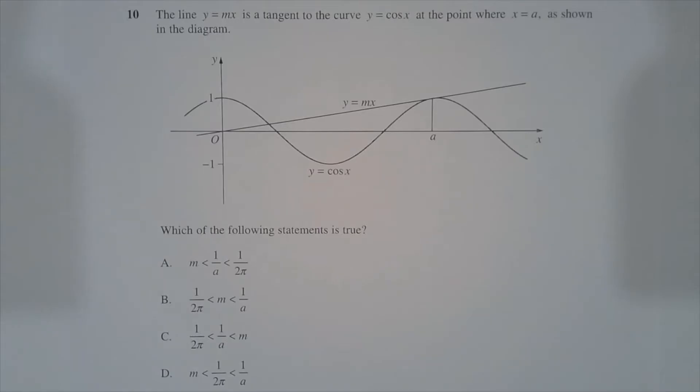Question 10. The line y equals mx is the tangent to the curve y equals cos of x at the point where x equals a, as shown in the diagram. Which of the following statements is true?